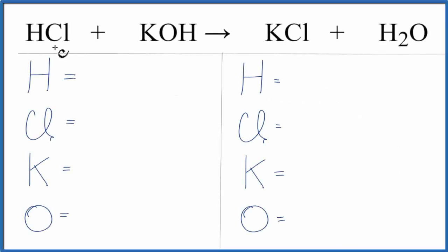In this video, we'll balance the equation HCl plus KOH yields KCl plus H2O. That's hydrochloric acid plus potassium hydroxide, and we get KCl, which is a salt and water.